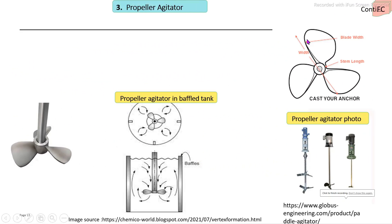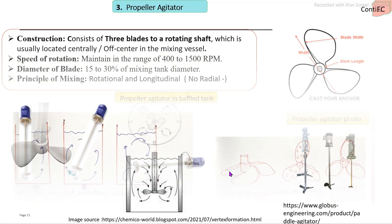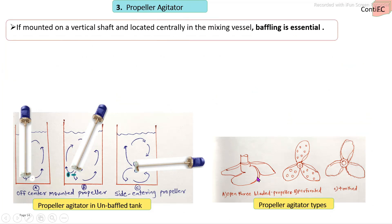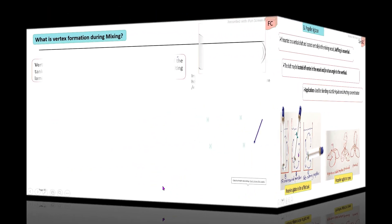The third type is the propeller agitator — a three-blade marine propeller most commonly used for low viscosity liquids. The main diameter of the propeller is 15 to 30% of the tank diameter. If the propeller is located at the center, internal baffles — typically four — must be provided to prevent vortex formation. The speed of rotation is 400 to 1500 RPM. Designs include open blade, perforated, and two- or three-blade types. The propeller may be positioned at center, off-center, or inclined.